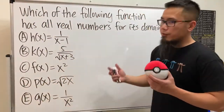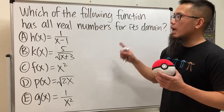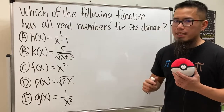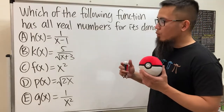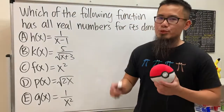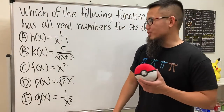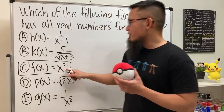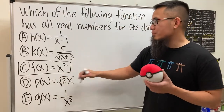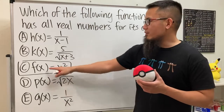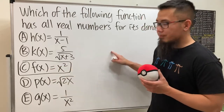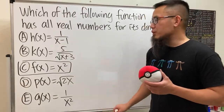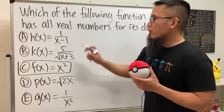We are given five functions and we need to find out which function has all real numbers for its domain. Remember, the domain is the set of all possible x values. Usually when we have fractions and square roots we have to be careful. You can go ahead and choose the answer, which is C, because x is not inside a square root and not in the denominator, so it has no restrictions. The function x squared is just a parabola, so the domain is all real numbers. But for extra practice, let's find the domains for the other ones.